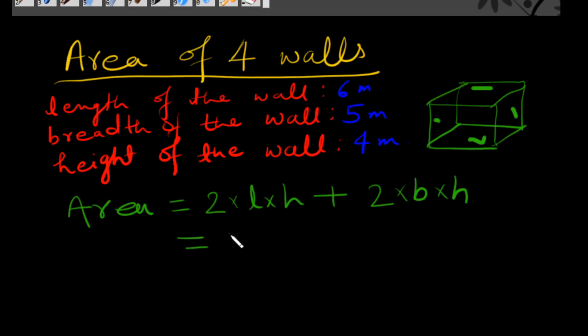So 2 times length is 6 and height is 4, plus 2 times breadth is 5 and height is 4.